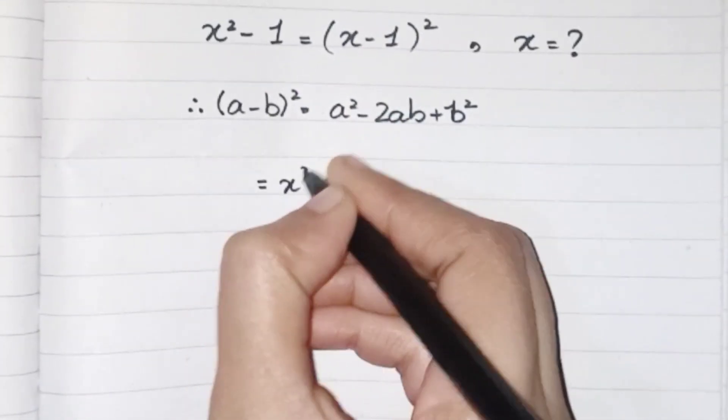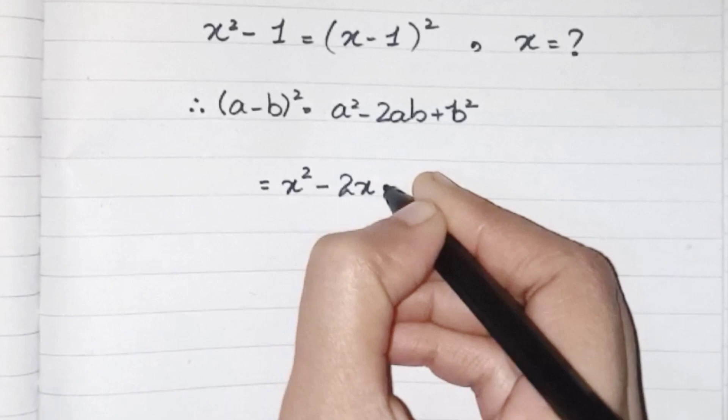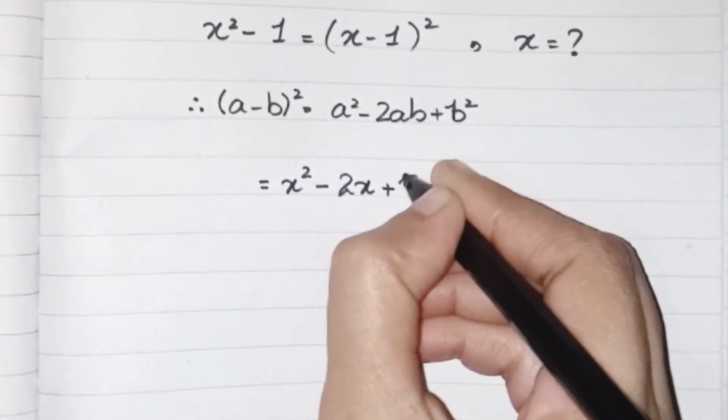Just placing all the values into the formula, it will become x² - 2x + 1.